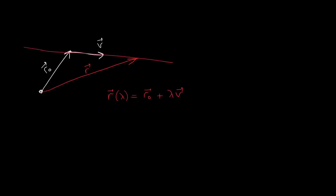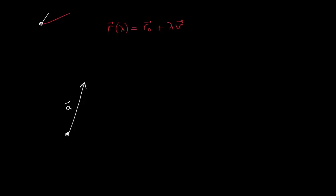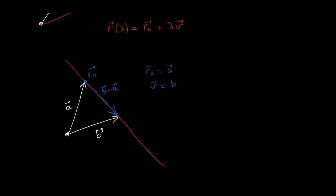For example, what if we are given two points given by vectors a and b? How can we write the equation of the line which crosses both points? That's relatively easy. What we can do is take r0 to be any of the two points, for example a, and then take the direction vector to be b minus a. Substituting these two into the equation of a line we get r of lambda equals a plus lambda times b minus a.